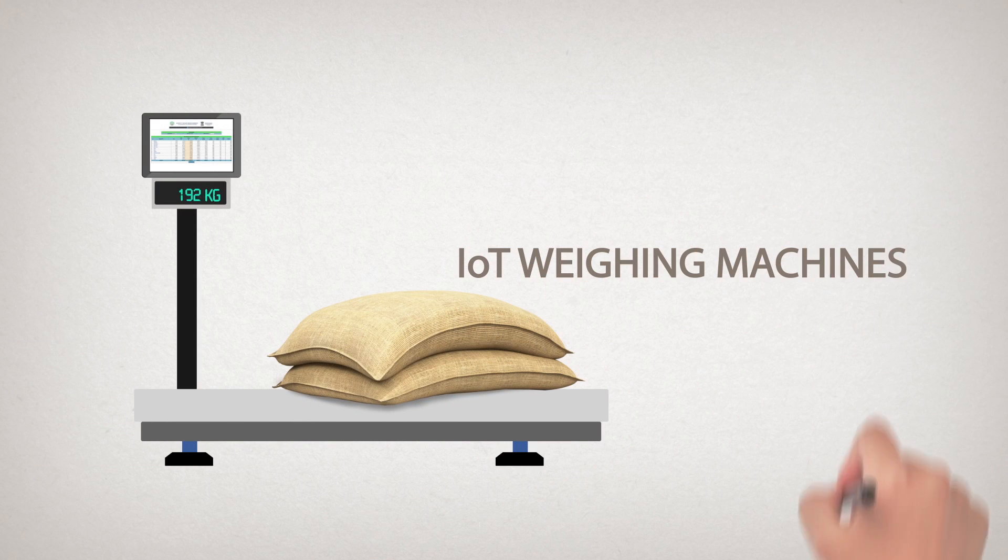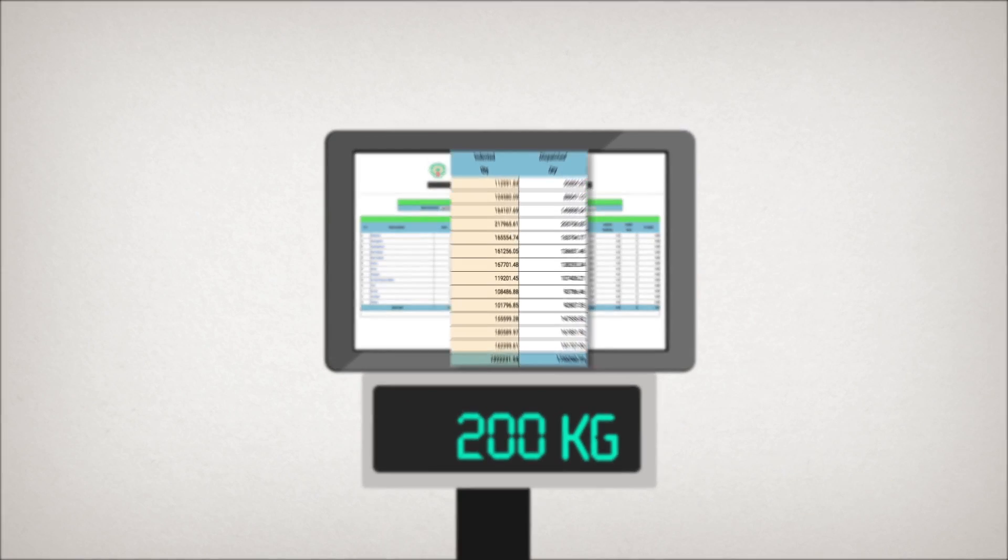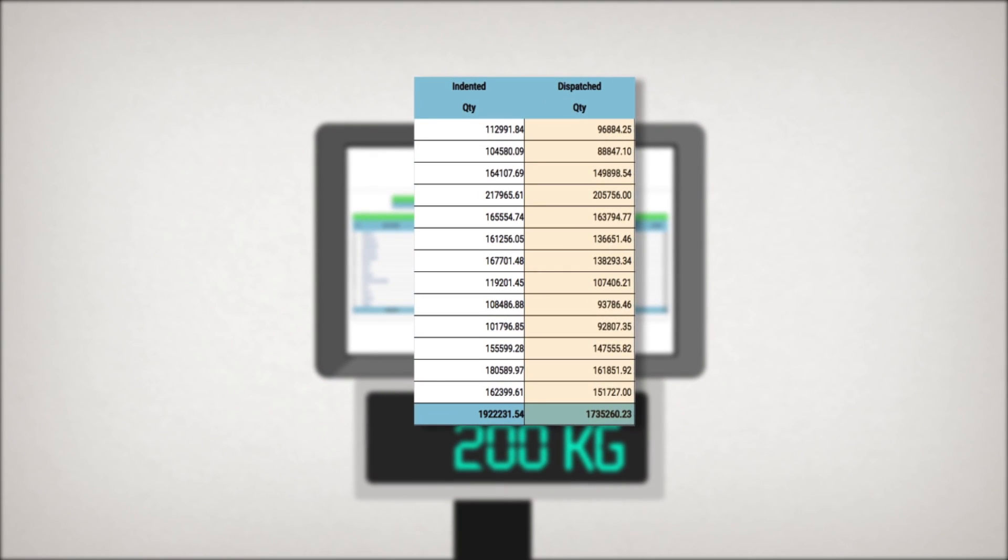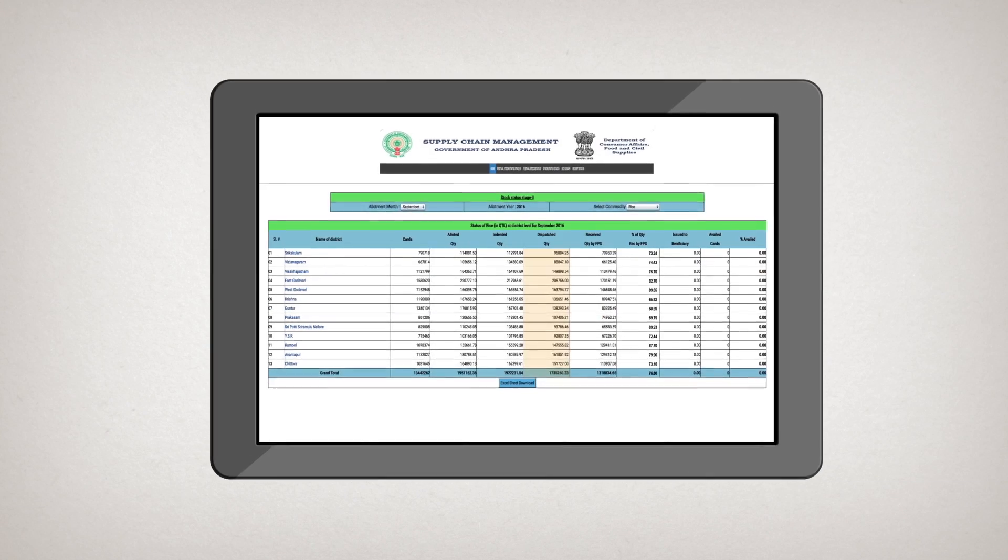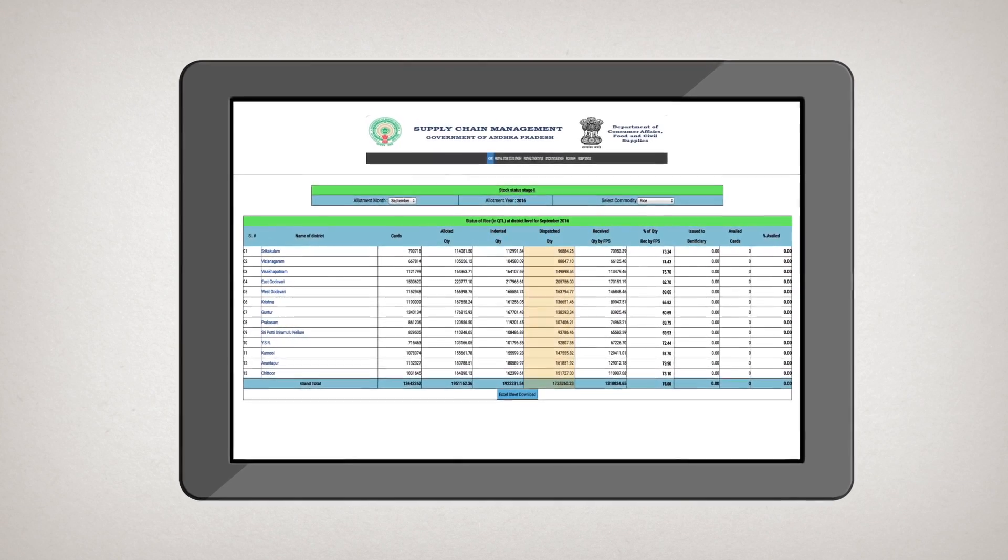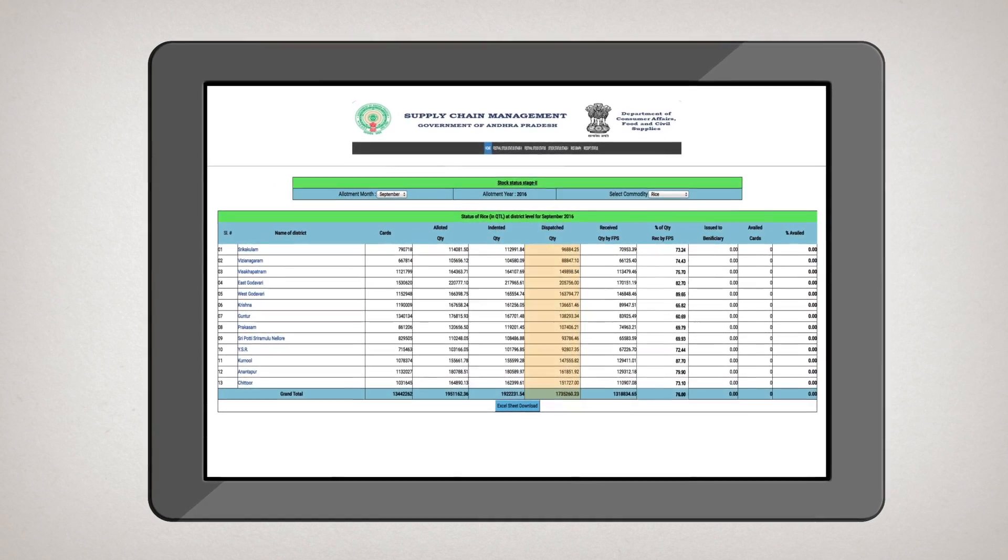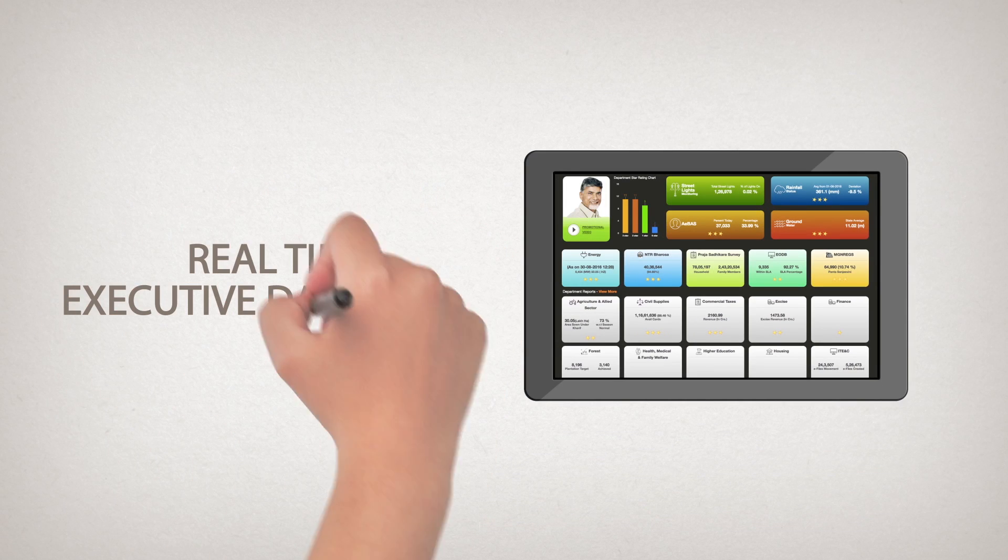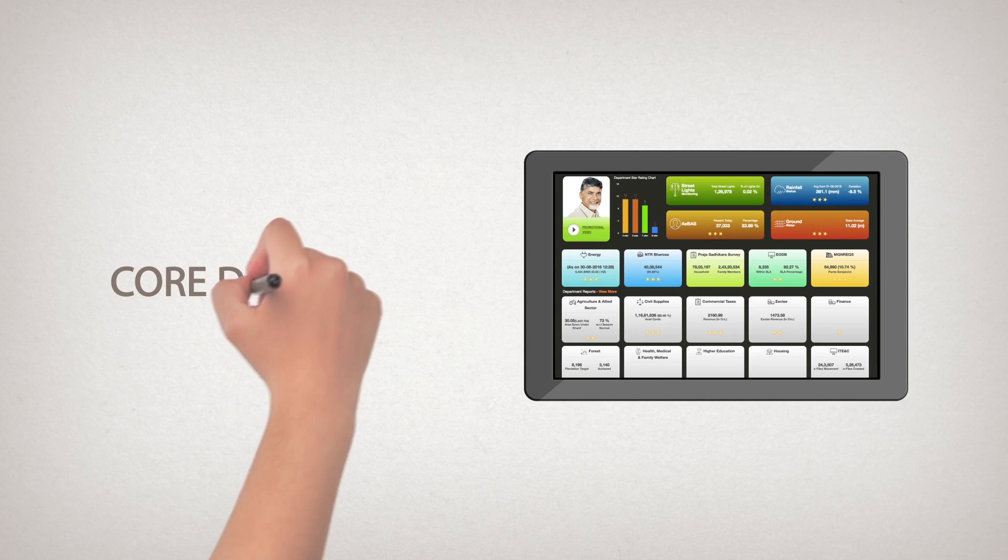Weighment is done through IoT weighing machines before being dispatched from MLS point to fair-price shops. The allocated and dispatched quantity is reflected real-time on the Chief Minister's Office Executive Dashboard, known as Core Dashboard.